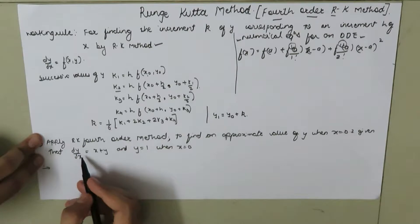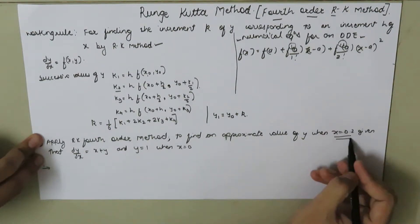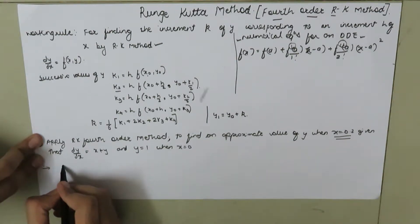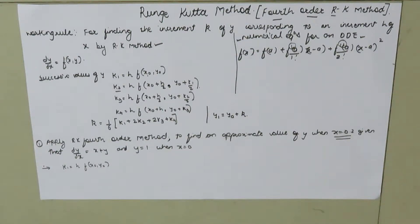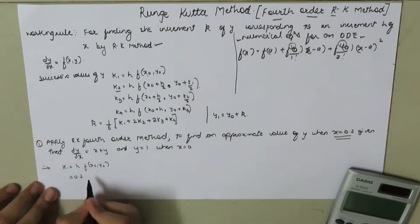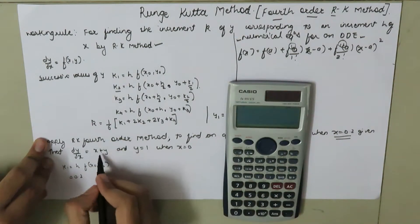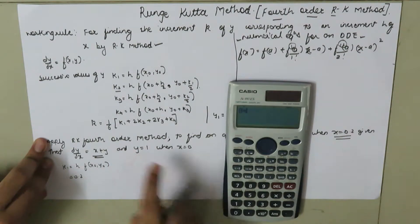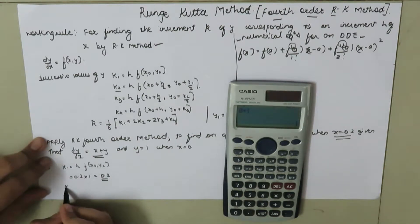Here is our problem: dy/dx = x + y, with y = 1 when x = 0, and increment h = 0.2. We calculate k1 = h * f(x0, y0). Using the calculator, this is 0.2 * f(0, 1). Since the function is x + y, this gives 0.2 * (0 + 1) = 0.2.